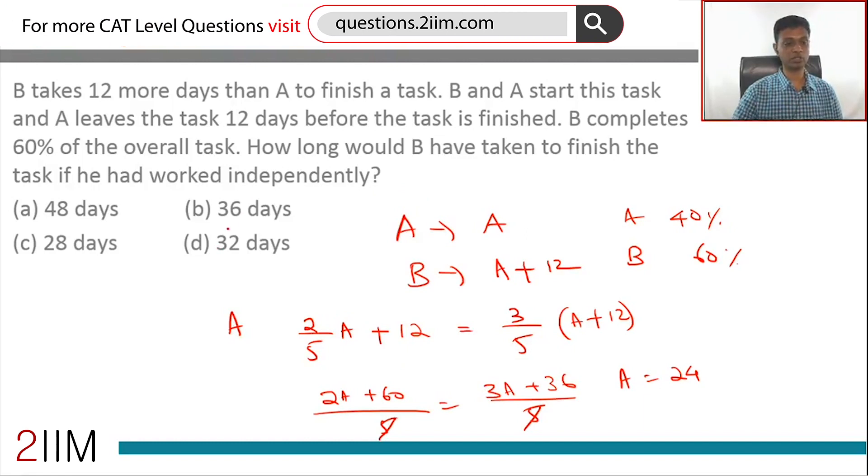Choice B. How long would B have taken to finish the task? He would take 36 days. A takes 24, B takes 12 more or 36. We've just done this digitally, we'll have a very quick look at that.